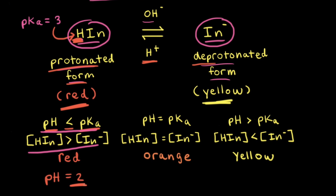At a pH of 2, we have a lot more of the protonated form, which is red, than the deprotonated form, which is yellow. Therefore, the color of the solution at a pH of 2 would appear to be red.